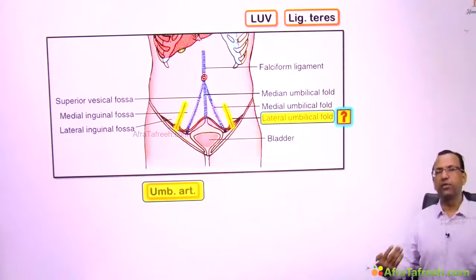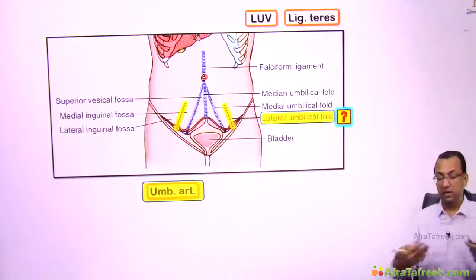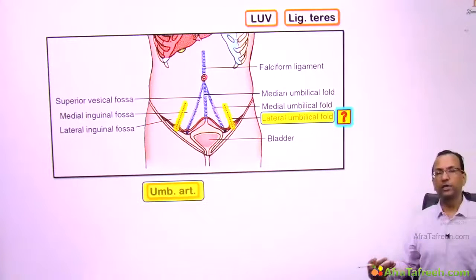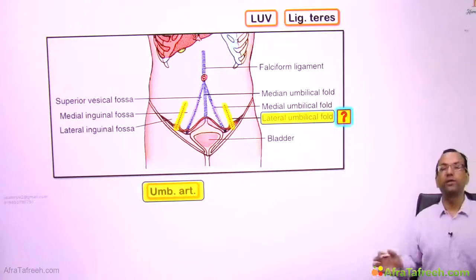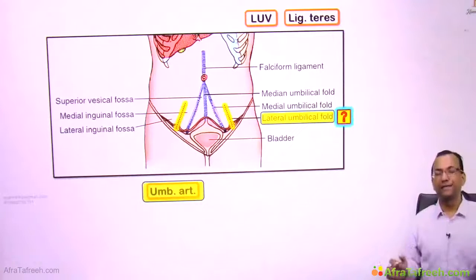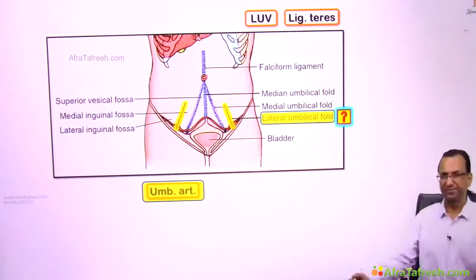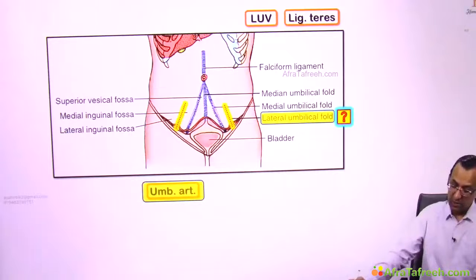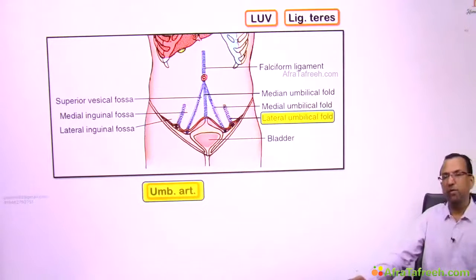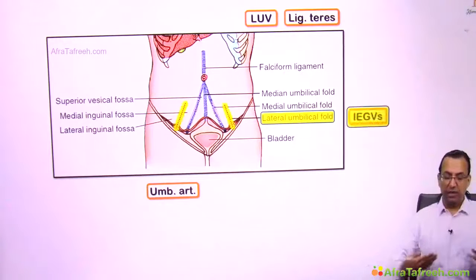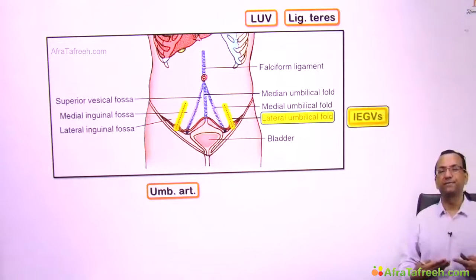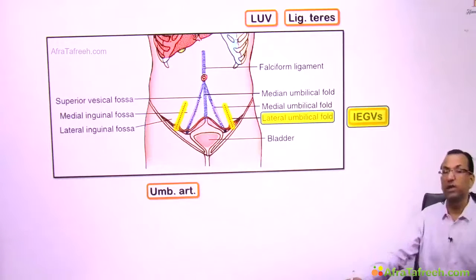The lateral umbilical fold is produced by blood vessels running toward and entering the rectus sheath — specifically the inferior epigastric artery and inferior epigastric vein. These vessels form the lateral umbilical folds as peritoneal folds covering them.